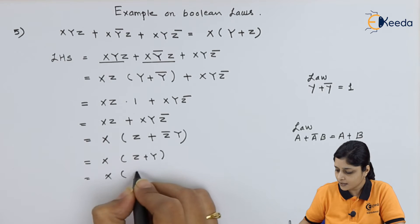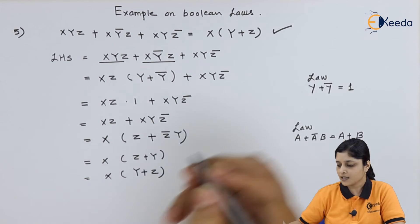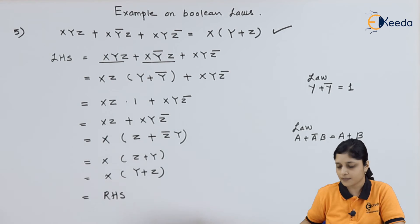Or you can write here y plus z. Now, if you see this term, this will be your RHS part, meaning left hand side is equal to the right hand side is proved.